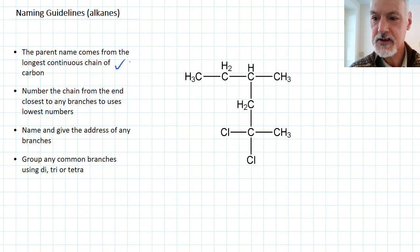Step number one says the first thing we need to do is identify the longest continuous chain. So if I start at this carbon and I go 1, 2, 3, 4, 5, 6, that forms my longest continuous carbon chain. And hence I know the parent name of this material. It's going to be called something hexane.